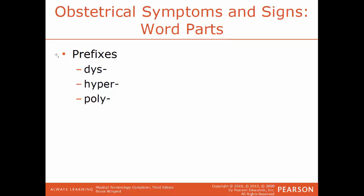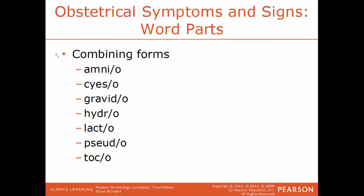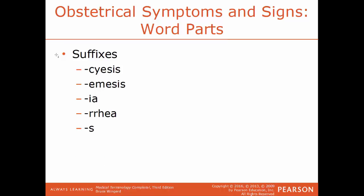Obstetrical signs and symptoms and word parts: prefixes include Dis for painful or abnormal, Hyper for above, and Poly for more than one. Combining forms include Amnio for amniotic sac, Siezo for pregnant, Gravido for pregnancy, Hydro for water, Lacto for milk, Pseudo for false, and Toko for birth or labor. Suffixes include Ciasis for pregnancy, Emesis for vomiting, Ea for condition, Urea for discharge, and S for plural.